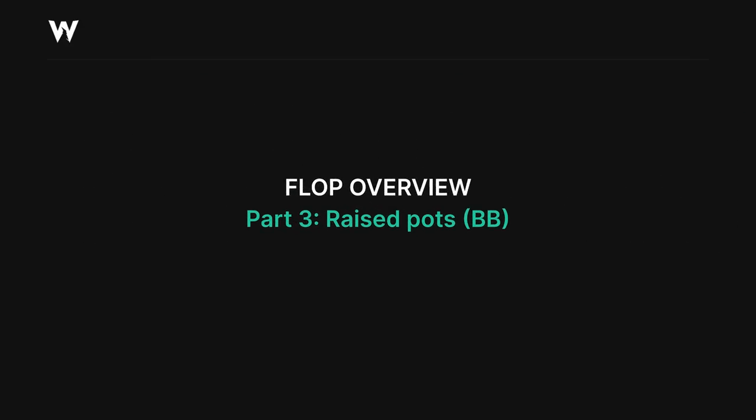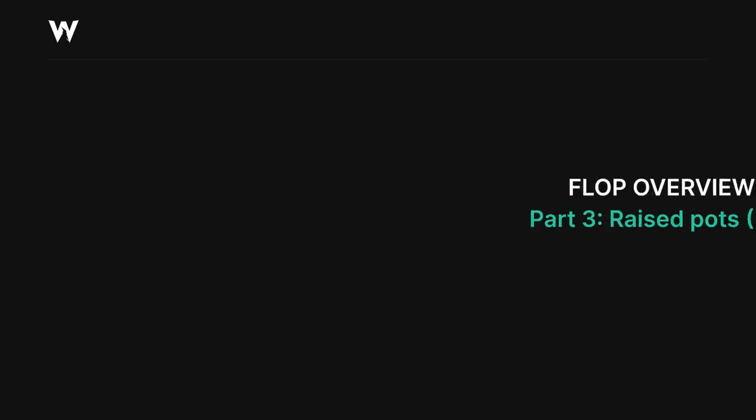To wrap up this video, let's end by switching to the big blind's perspective and looking at the big blind's cbet strategy after the small blind limp calls. Note in this case that the small blind will have some donk bets on certain boards, and we're not accounting for that. If we remove the small blind donk bet, then the big blind's overall strategy would likely become more passive overall.